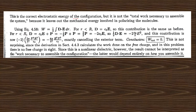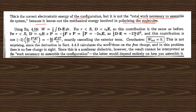The next part calculates W using equation 4.55, W = (epsilon_naught/2) * integral of E^2 dτ. Using the electric fields for r < R and r > R, the work done W is computed for both regions and summed. However, this is the electrostatic energy of the configuration, not the total work necessary to assemble the system, because it leaves out the mechanical energy involved in polarizing the molecules. Since this is a non-linear dielectric, the result cannot be interpreted as the work needed to assemble the configuration — it depends entirely on how the assembly is carried out.